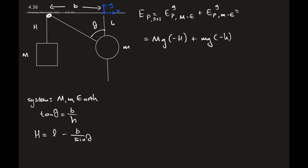For the system, I am using the cube, the mass, and the earth. This way I am including all potential energies in the system. The potential energy of the system would be the gravitational potential energy between the cube and the earth, and the gravitational potential energy between the mass and the earth. I am neglecting the gravitational potential energy between the cube and the mass, because that is going to be so much smaller — not important at all compared to those two gravitational potential energies.